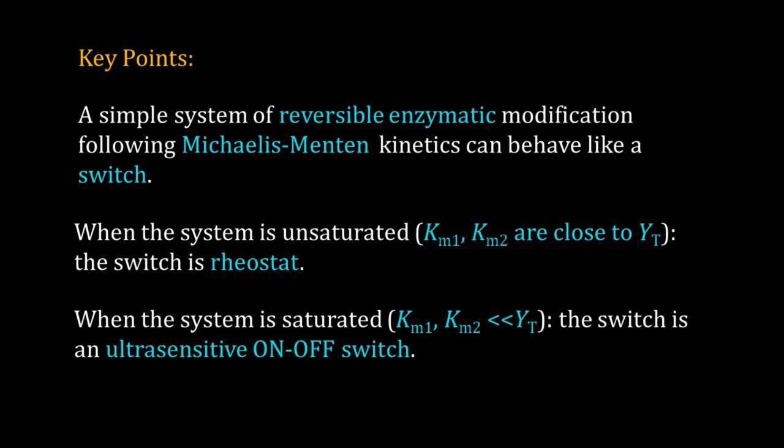The Michaelis-Menten constant is fixed for an enzyme, you cannot change it, but a cell can change the total amount of the substrate. Therefore, a rheostat can become an ultrasensitive switch if the expression of the protein is increased, and the opposite can also happen. That's all for this video. Thank you for learning with me.